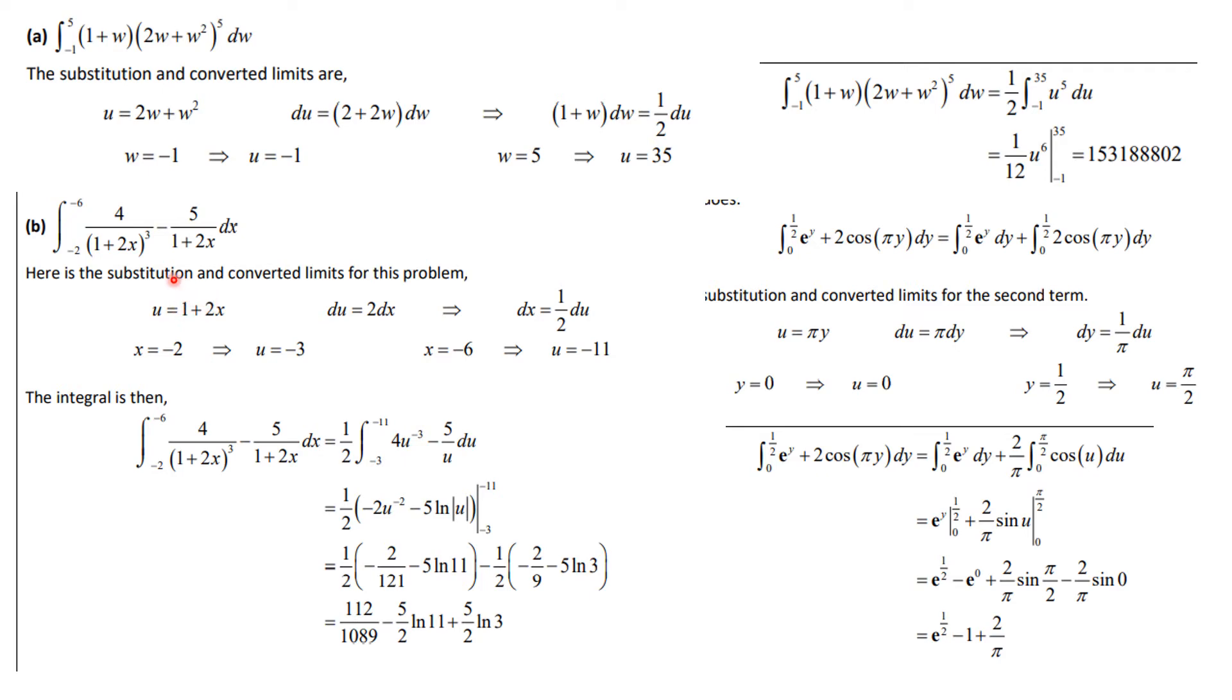Let's look at number b. The same substitution can work for both of these terms. It's going to be u equals 1 plus 2x, du is 2dx, and dx is 1 half du. Again, when x is minus 2, I plug in and u is minus 3. When x is minus 6, u is minus 11. So then the integral of this becomes 1 half the integral from minus 3 to minus 11. That is going to be 4u to the minus 3 minus 5 over u du. We integrate both of those terms, we get this. And notice that I'm using u's. This is u, these are u's. So I substitute those values in. You should check the arithmetic. And this is what you get for an exact answer.